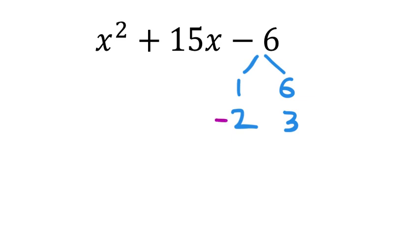What about if we make the 2 negative? Well, negative 2 plus 3 is 1, so that's no good. What if I make the 3 negative? Well, 2 plus negative 3 is negative 1 — that's garbage.